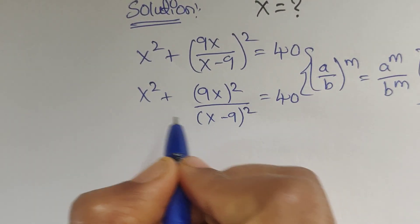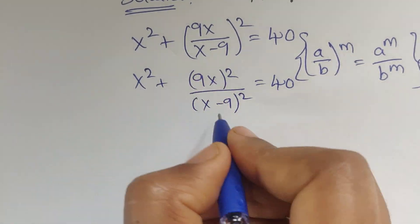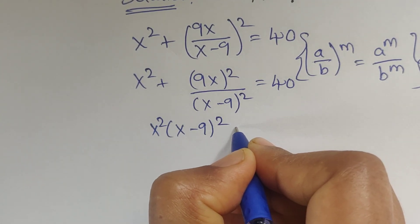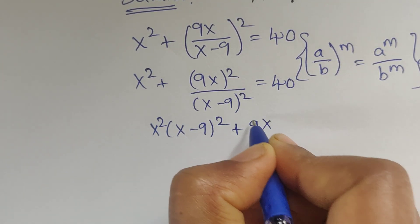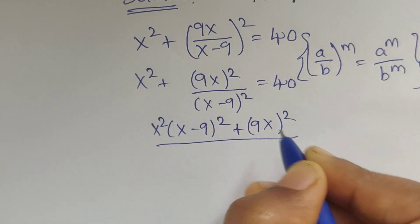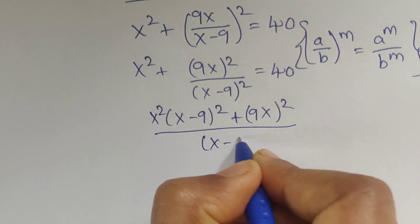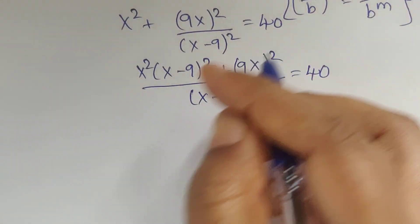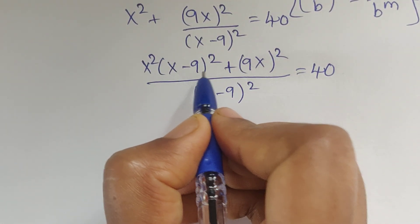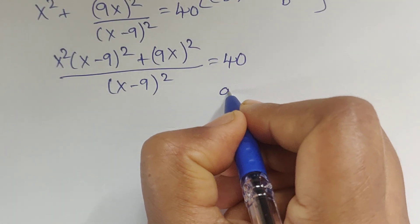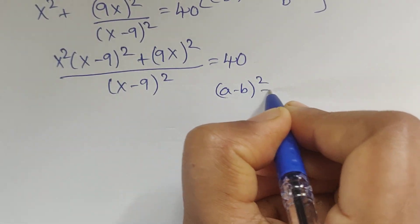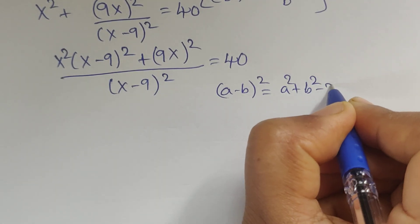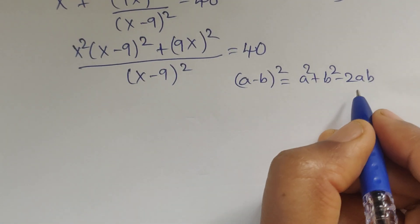Now multiply these two terms. Then we will get x squared times x minus 9 whole to the power of 2, plus 9x whole squared, divided by x minus 9 whole to the power of 2, equal to 40. Now this is in the form of a minus b whole square. We know the formula: a minus b whole square equals a squared plus b squared minus 2ab.